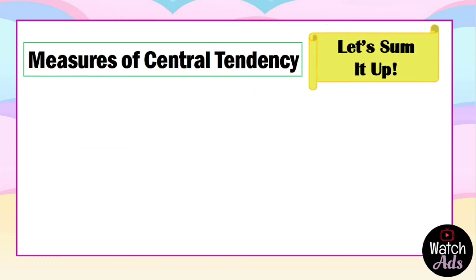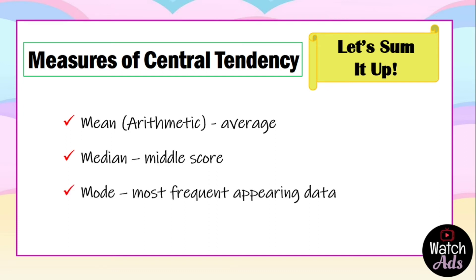Now to sum it up, we have three measures of central tendency. First is the arithmetic mean or the average. Second is the median or the middle score. And third is the mode, which is the most frequent appearing data. And that's the end of our lesson about measures of central tendency.